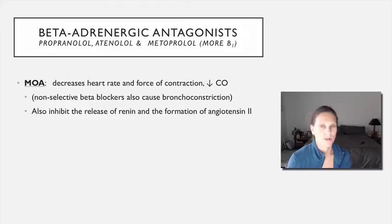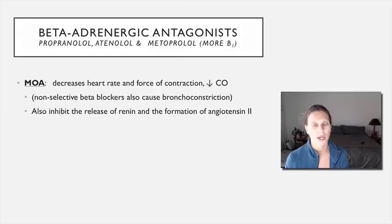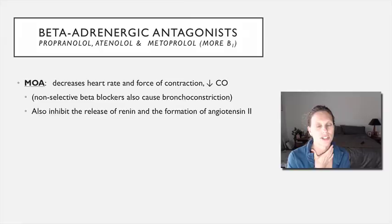Alpha-1 blockers are not first-line therapy. With beta blockers — the beta adrenergic antagonists — we have two types of beta receptors: beta-1 and beta-2. Ideally we choose a beta-1 selective drug. Metoprolol is a beta-1 selective agent; propranolol and atenolol are not as selective but do block beta-1 receptors. Blocking beta-1 receptors decreases heart rate and force of contraction, decreasing cardiac output. If we're not using a selective agent, blocking beta-2 receptors can cause bronchoconstriction.